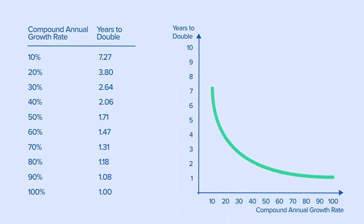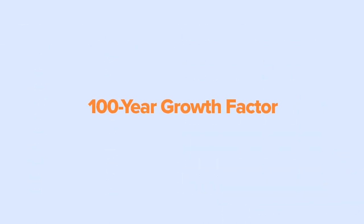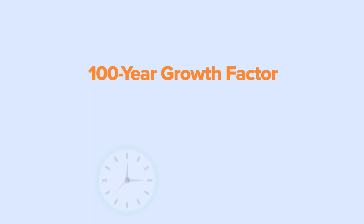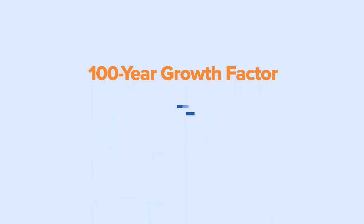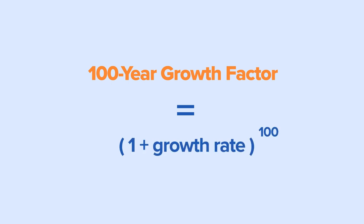The second useful measure economists use is the 100-year growth factor. This measure shows you how much larger something gets at a particular compound annual growth rate every 100 years. This value can be found using the compounding equation of 1 plus the period growth rate raised to a power of 100.